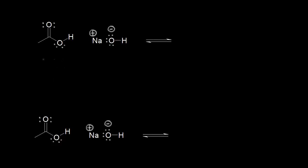On the left, acetic acid is going to function as our Bronsted-Lowry acid — it's going to be a proton donor. On the right, we have sodium hydroxide, and hydroxide is going to accept a proton. It is going to be a Bronsted-Lowry base.